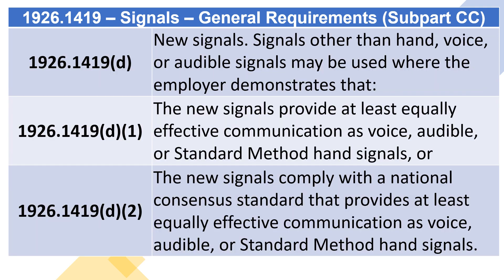1926.1419(D) — New Signals: Signals other than hand, voice, or audible signals may be used where the employer demonstrates that — 1926.1419(D)(1) and (D)(2) — the new signals provide at least equally effective communication as voice, audible, or standard method hand signals; or the new signals comply with a national consensus standard that provides at least equally effective communication as voice, audible, or standard method hand signals.